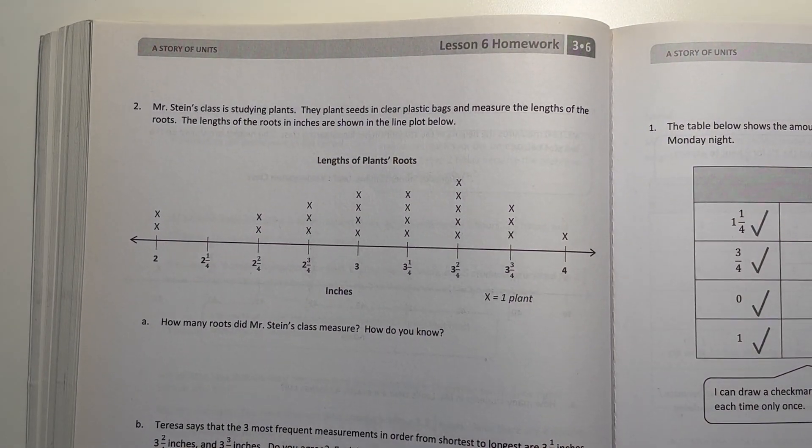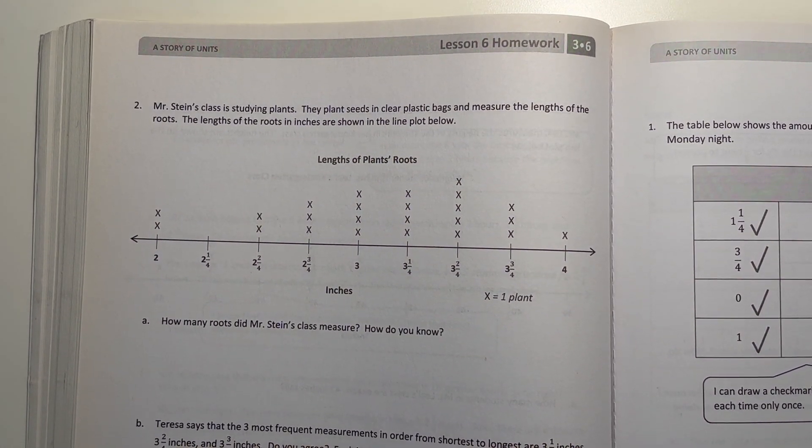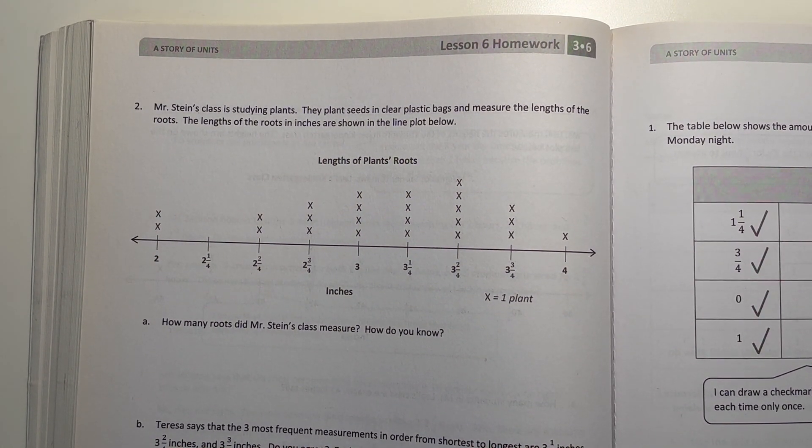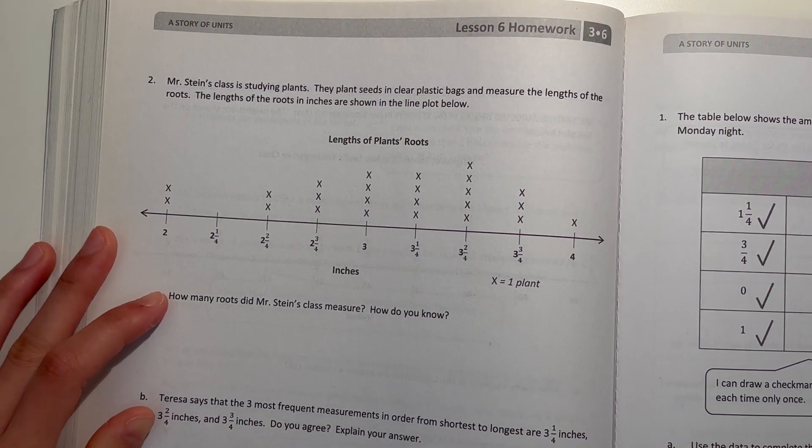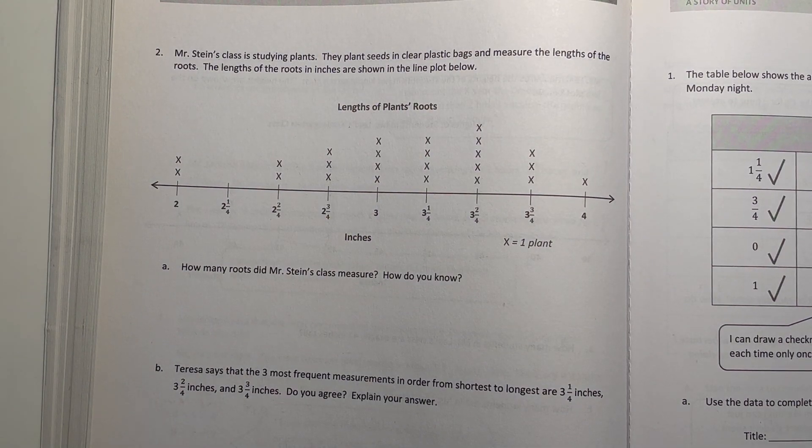Number 2. Mr. Steen's class is studying plants. They plant seeds in clear plastic bags and measure the lengths of the roots. The lengths of the roots in inches are shown on the line plot below. So A, how many roots did Mr. Steen's class measure? How do you know? Each x is one plant.